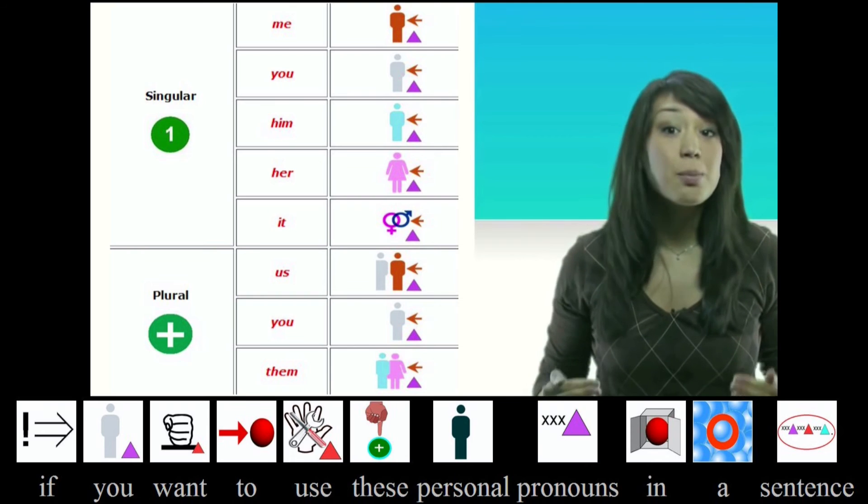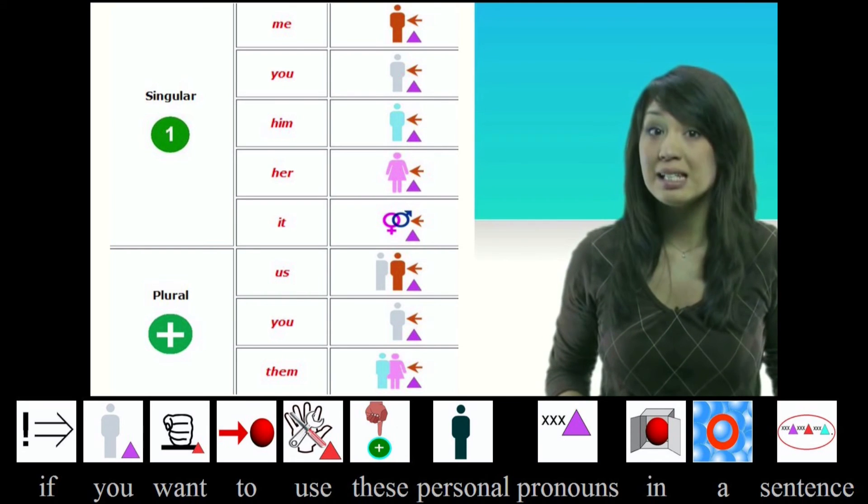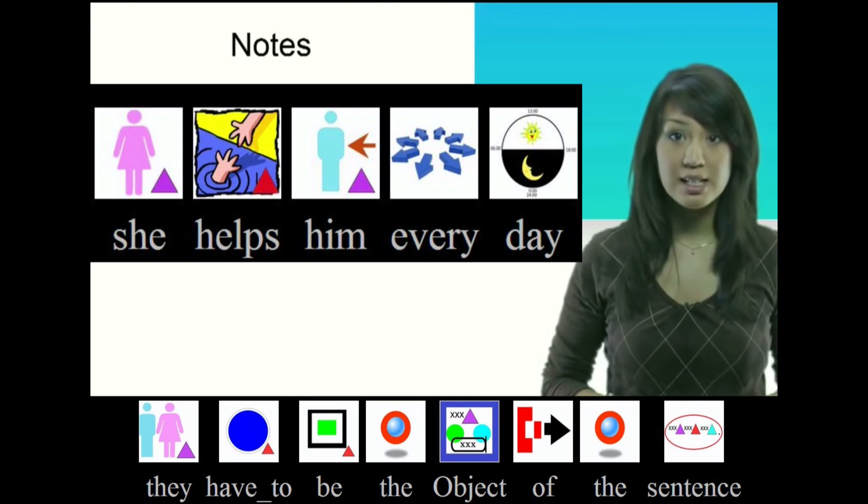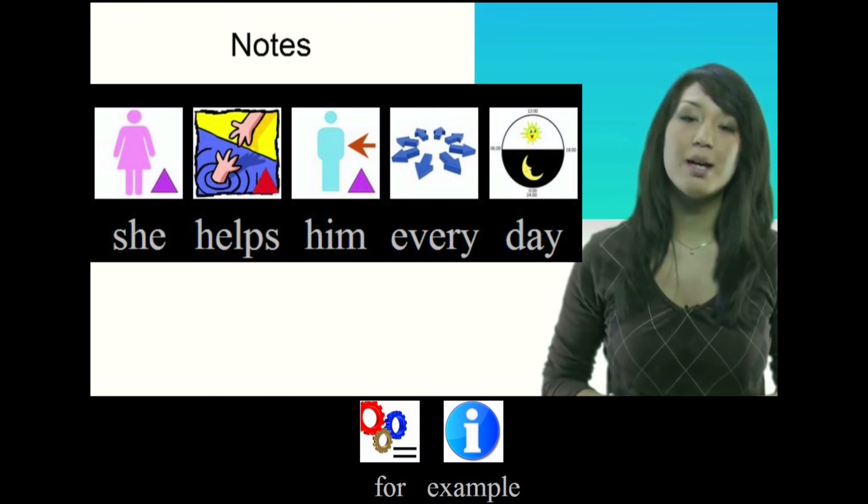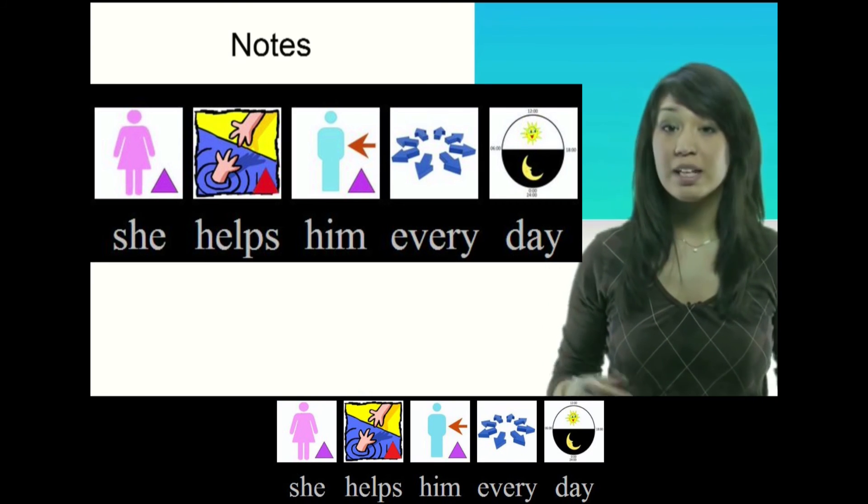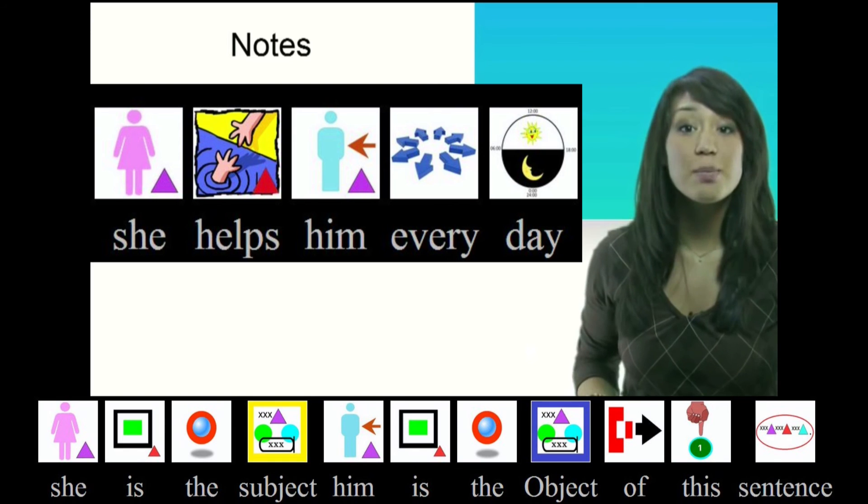If you want to use these personal pronouns in a sentence, they have to be the object of the sentence. For example, she helps him every day. She is the subject.